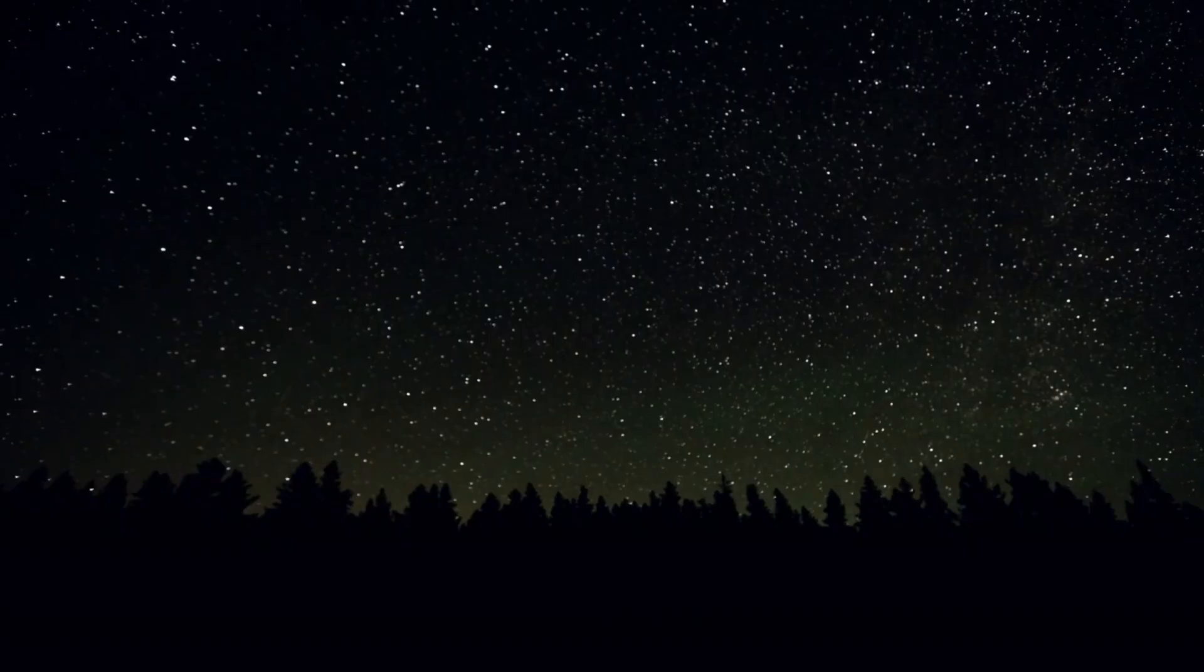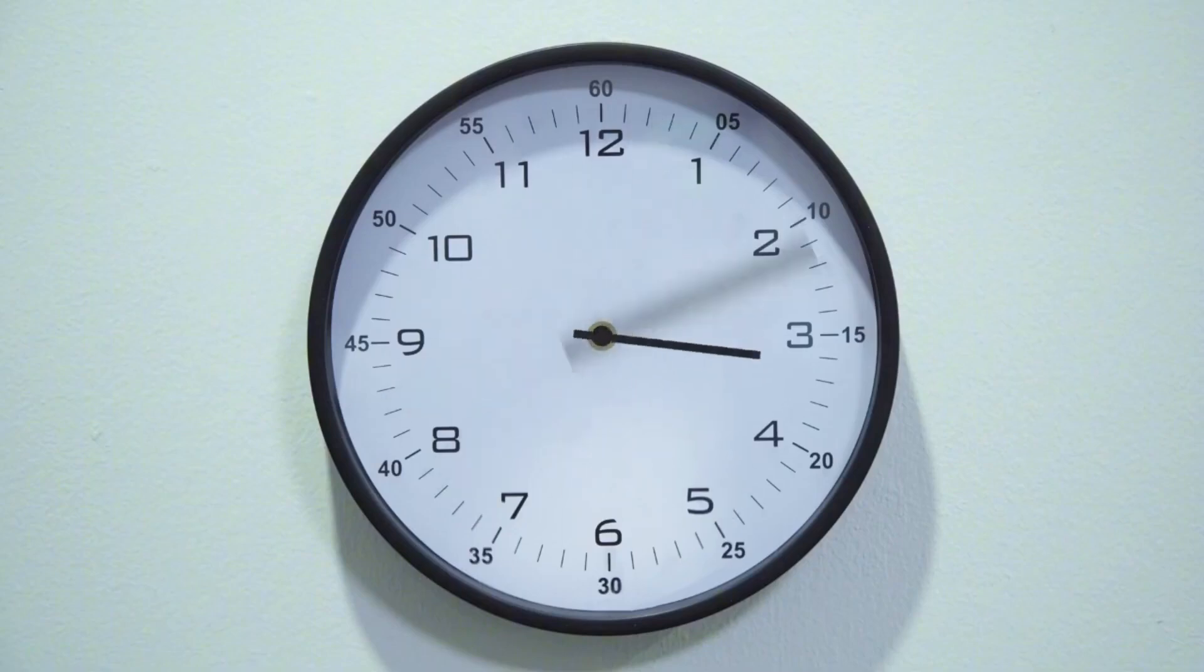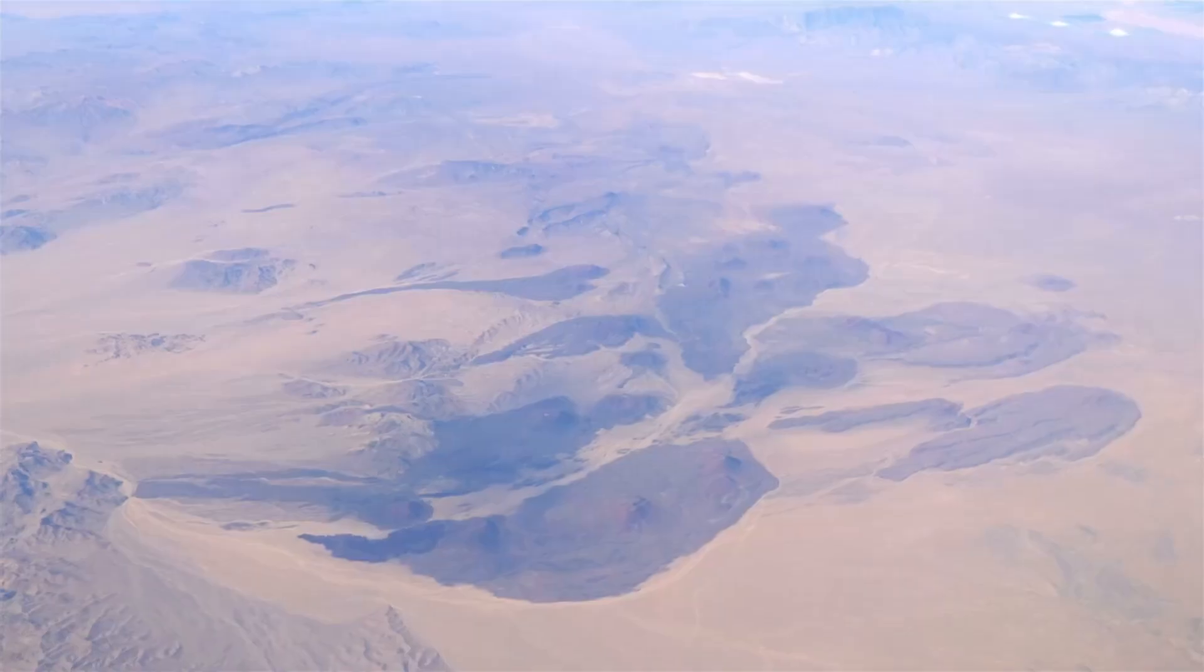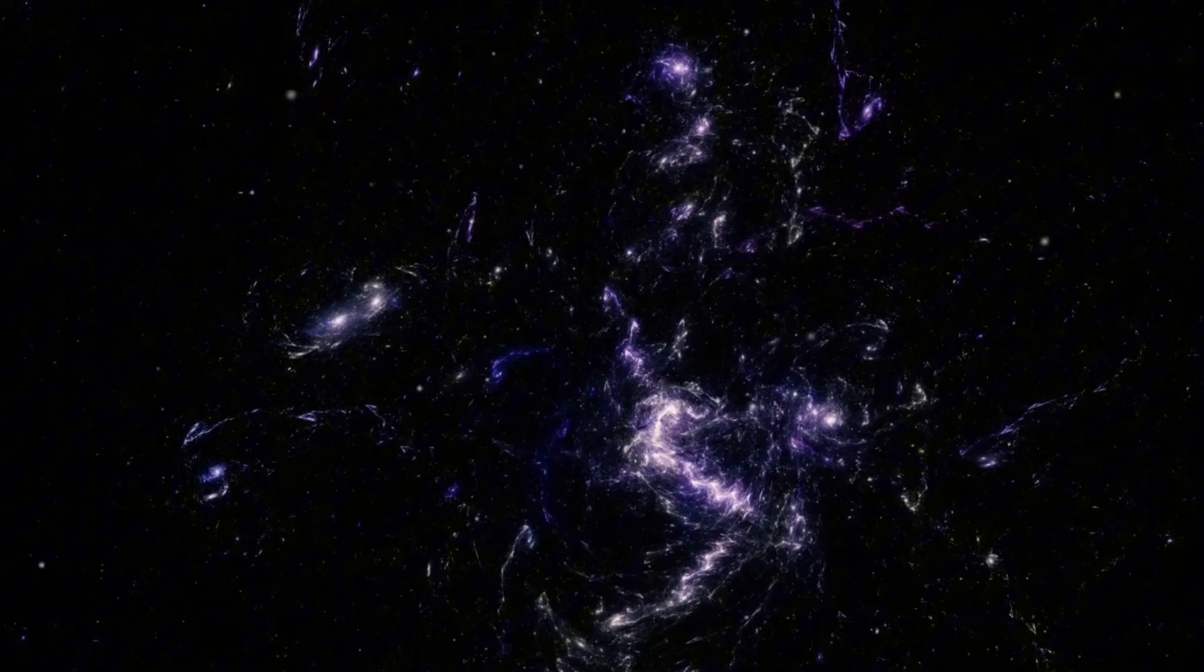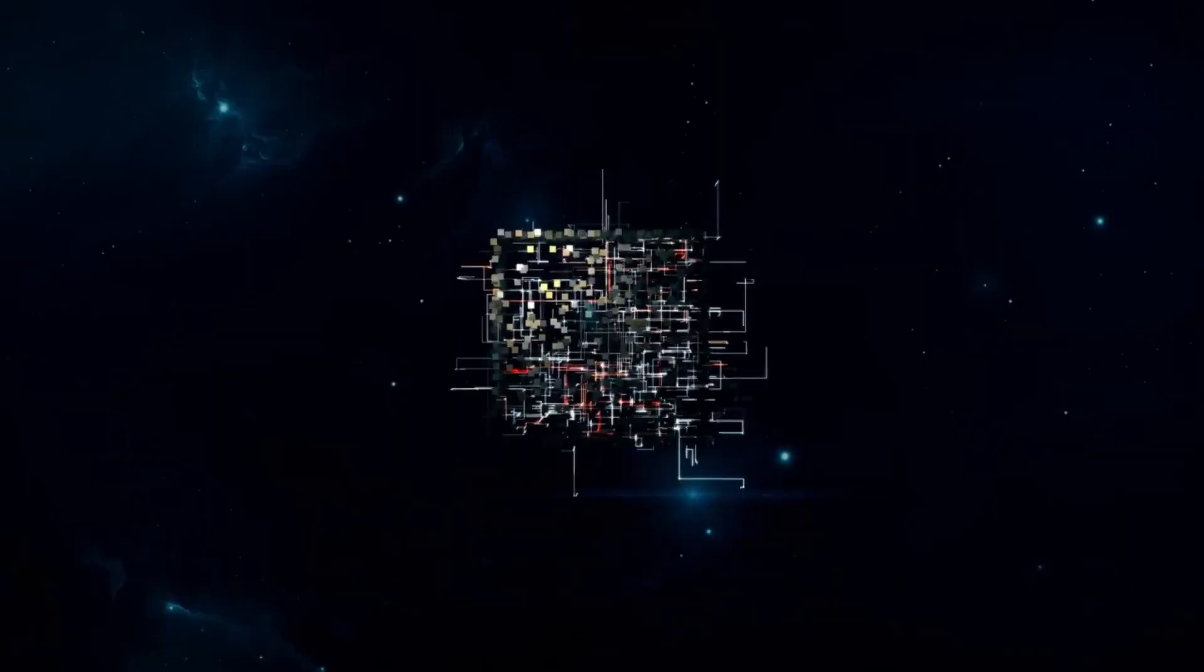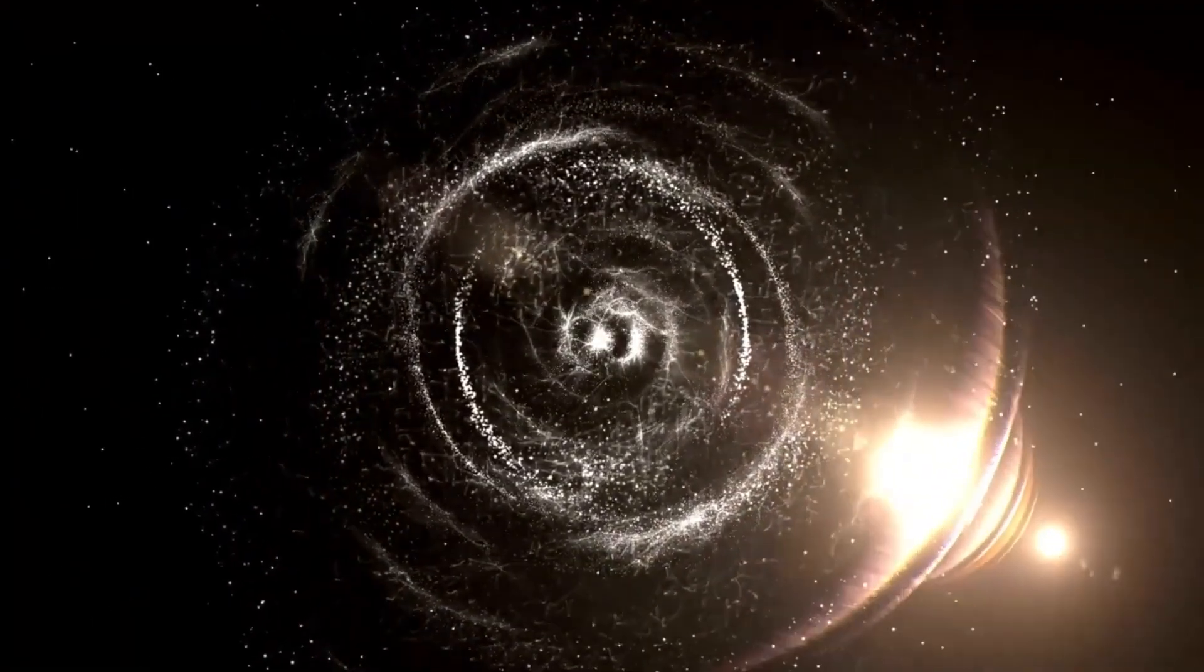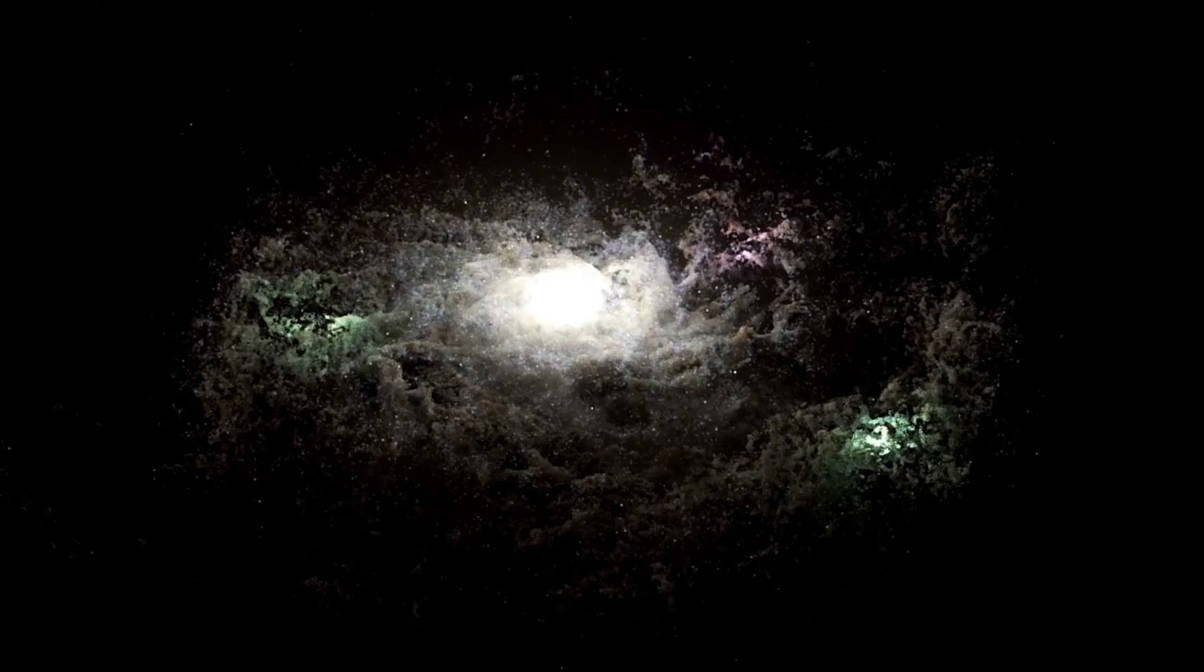One of the most intriguing possibilities is the cyclic universe theory. This model suggests that the universe undergoes endless cycles of expansion and contraction. In this scenario, the Big Bang wasn't the first event, but merely the latest in an infinite series of cosmic explosions. Each cycle begins with a Big Bang, expands to a maximum size, and then collapses back into a singularity, triggering another Big Bang. This raises profound questions. What existed in the previous cycle? Could there have been life, civilizations, or even forms of existence beyond our comprehension? If the universe has cycled through countless iterations, what remnants of past universes might still linger in our reality?